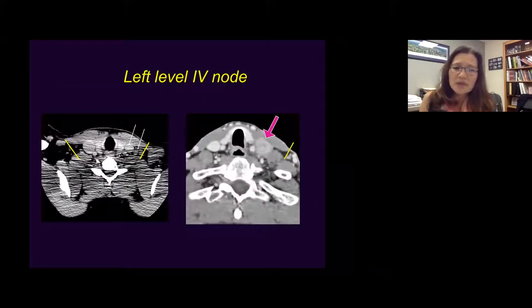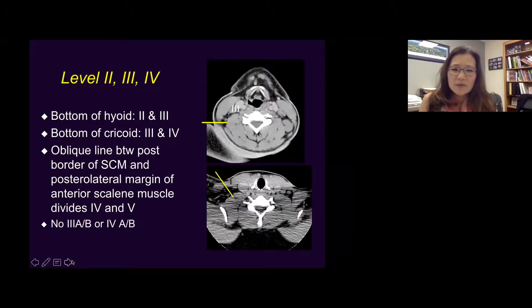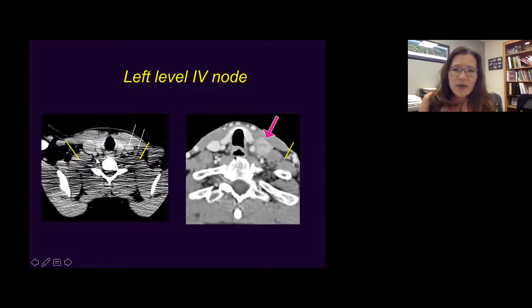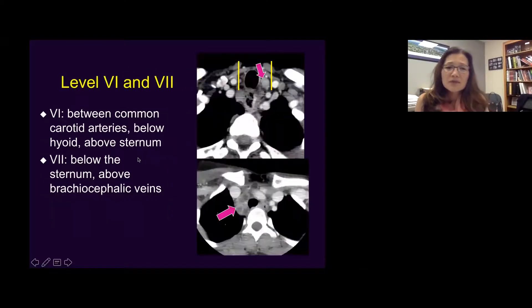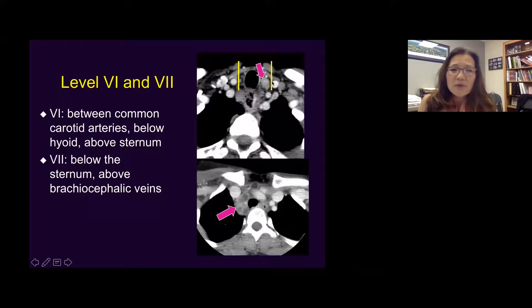Level six lymph nodes are medial to the carotid artery. For example, using the oblique line from the anterior scalene muscle to SCM, medial to that would be level four lymph nodes, and those lateral would be level five. Level six lymph nodes are identified by drawing a line along the carotid artery — any lymph node medial to the carotid at that level would be level six. Level seven lymph nodes are below the sternum, in what you might call the superior mediastinal region.